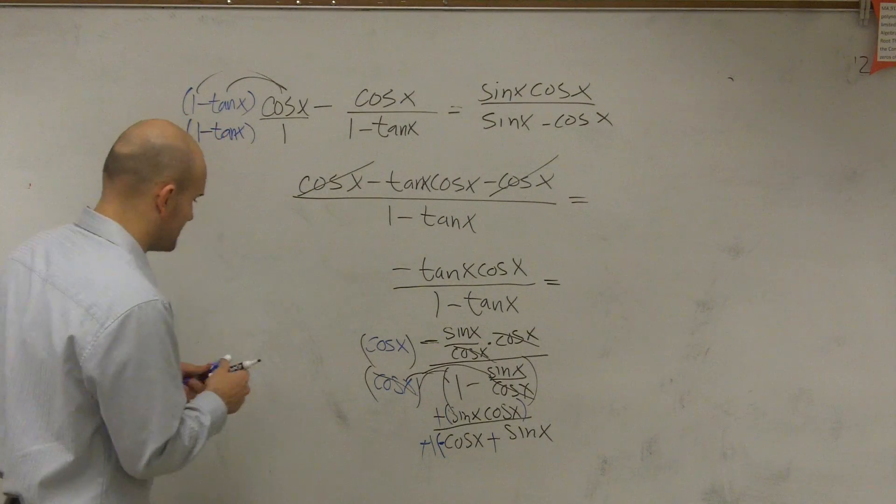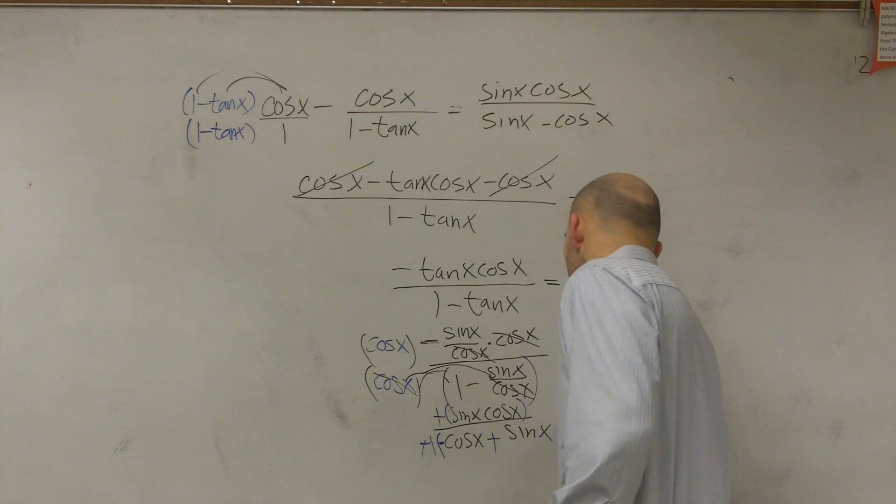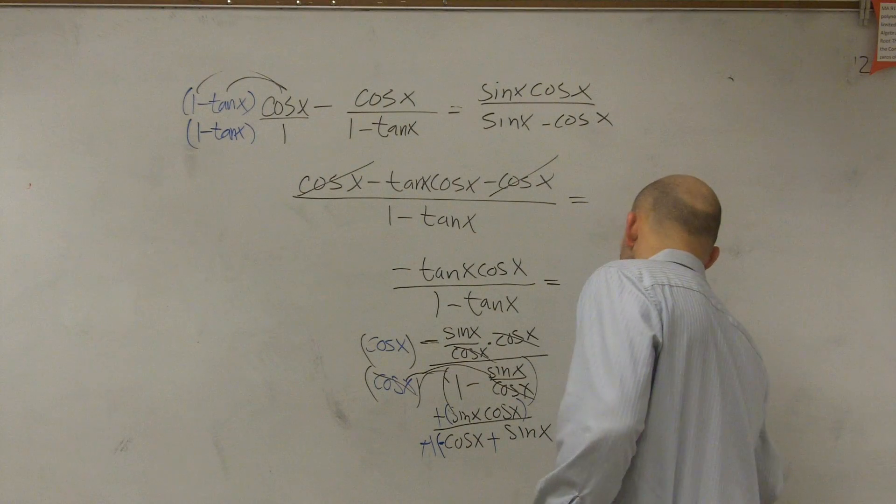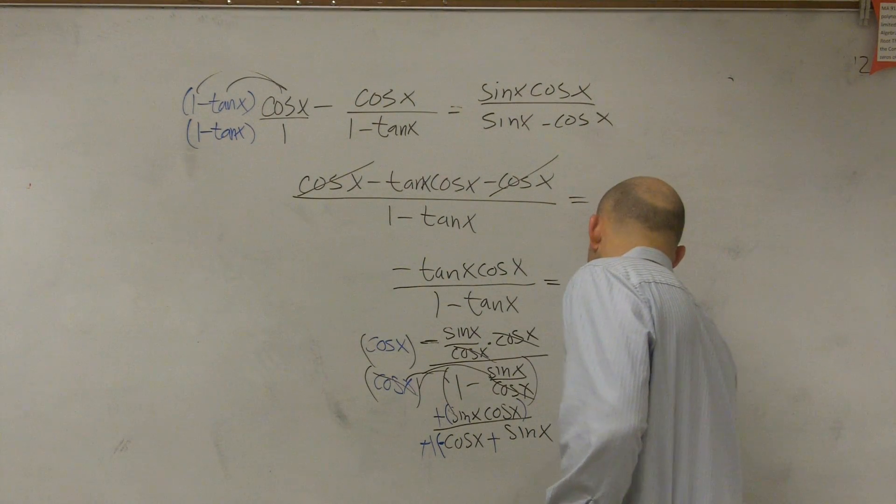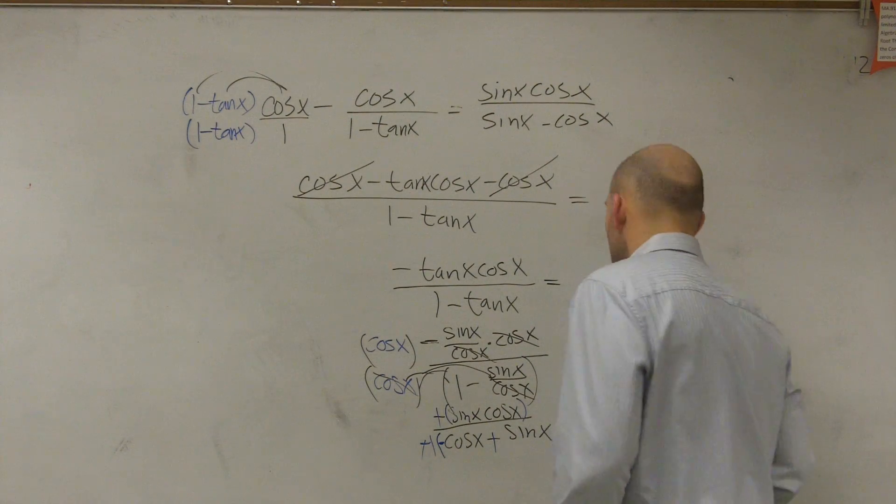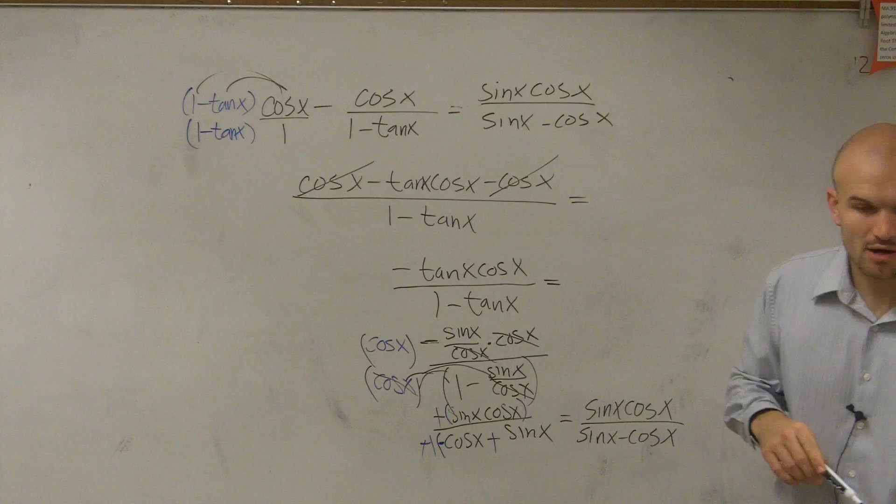And therefore, I'm left with this equals a now positive sine of x cosine of x divided by sine of x minus cosine of x, which, of course, is equal to our right side.